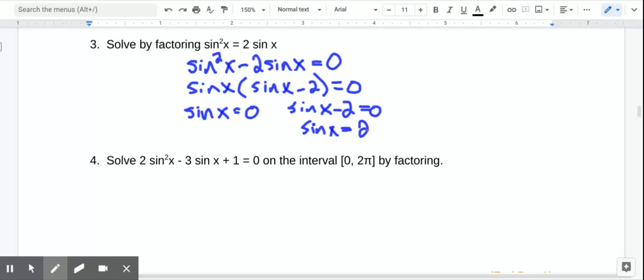All right, so I'm going to take a look at this right side first. Sine x equals 2. There is no solution to that. Sine can never be 2 because remember the range of sine is only between 1 and negative 1. So it's never going to be 2.